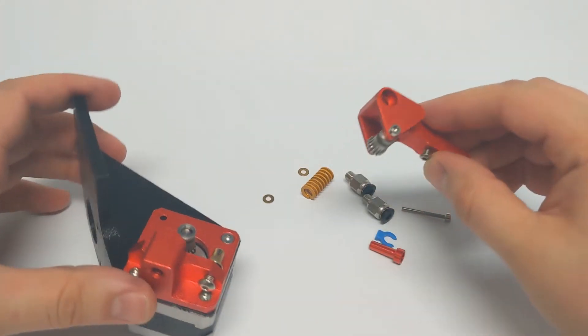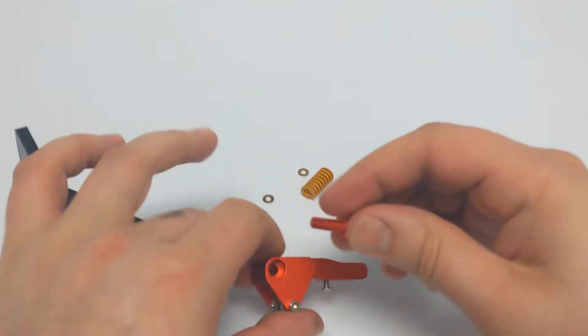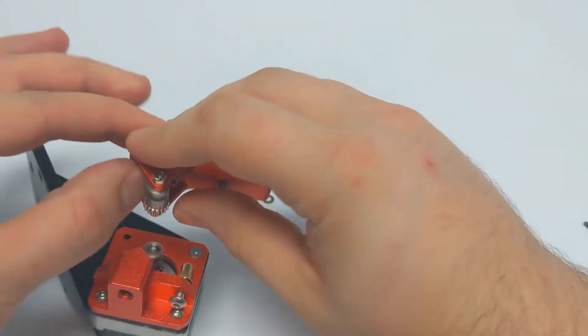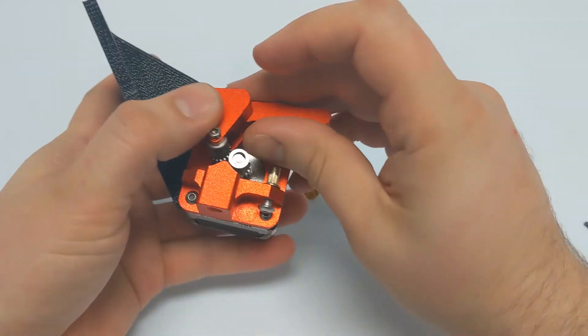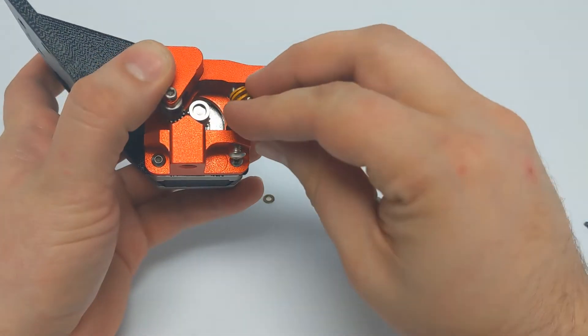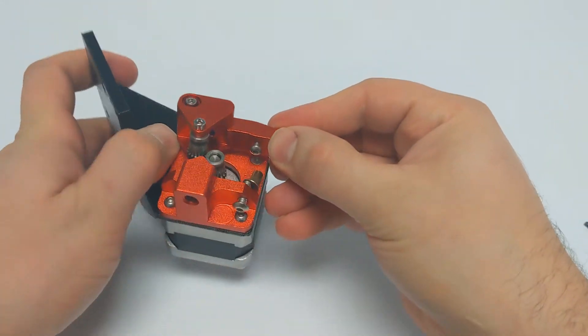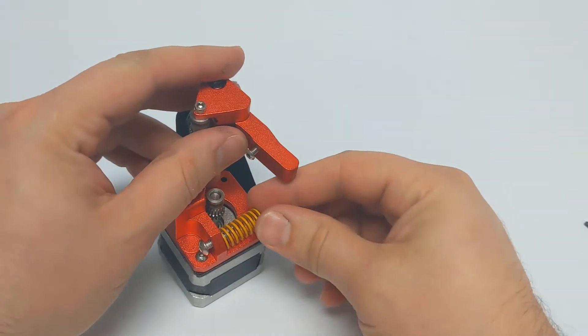The last step is a little tricky. We are going to find the longest M3 screw and the spacer that belongs in the pivot hole of the lever arm. You'll need to compress the extruder arm to make everything line up correctly and then tighten the M3 screw to attach the arm.